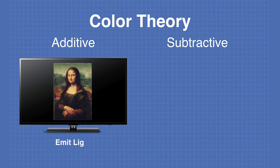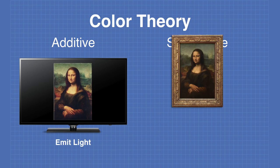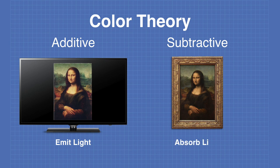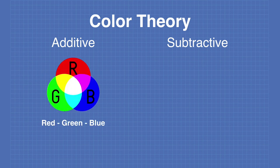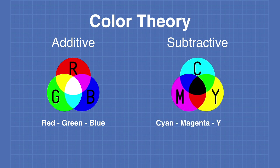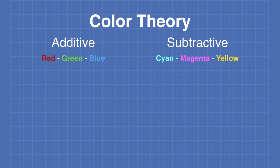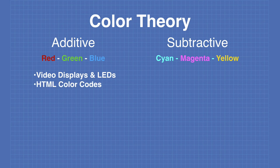Additive colors involve media that emits light, whereas subtractive colors involves media that absorbs light. The primary additive colors used most often are red, green, and blue. The most common subtractive colors are cyan, magenta, and yellow. The red, green, blue color scheme is used for video displays and for multicolored LEDs. The HTML color codes that define colors on web pages also use red, green, blue.